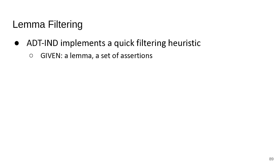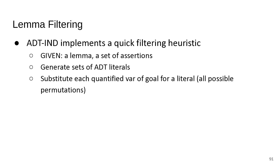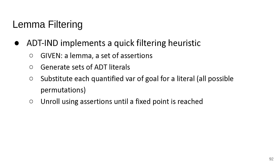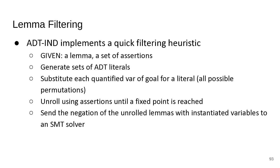Given a lemma and a set of assertions, the filtering procedure first generates a set of ADT literals. Then we substitute each quantified variable in the goal for a literal until we get all possible permutations. We unroll using the assertions until a fixed point, then send the negation of all unrolled lemmas to an SMT solver.